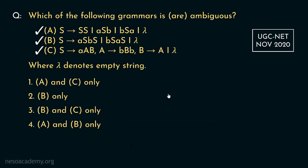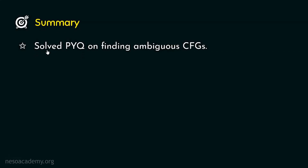Looking at the options: option 1 says A and C only are ambiguous; option 2 says B only; option 3 says B and C; option 4 says A and B. But we found that all three grammars — A, B, and C — are ambiguous. So none of the given options are correct, which is interesting.